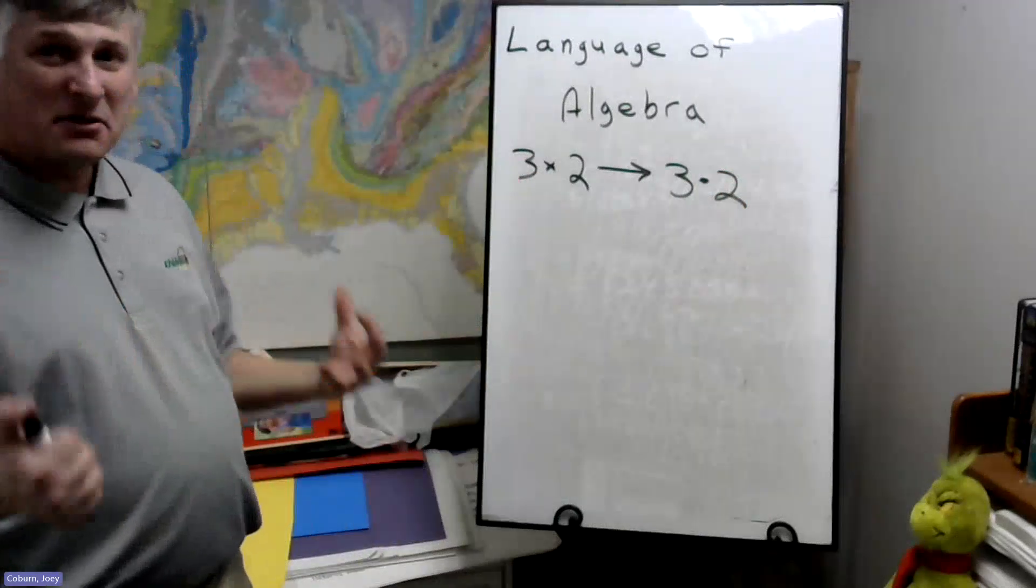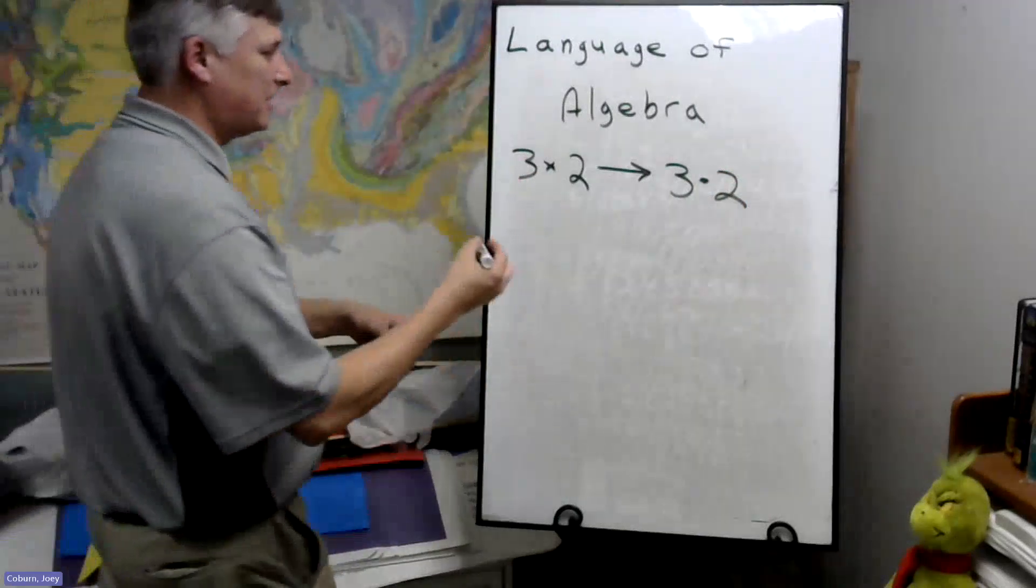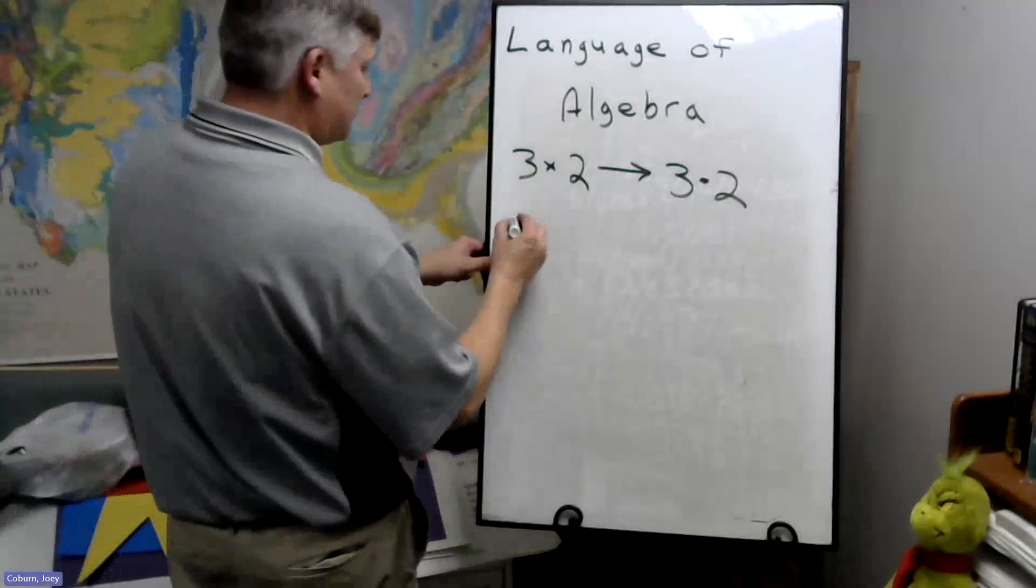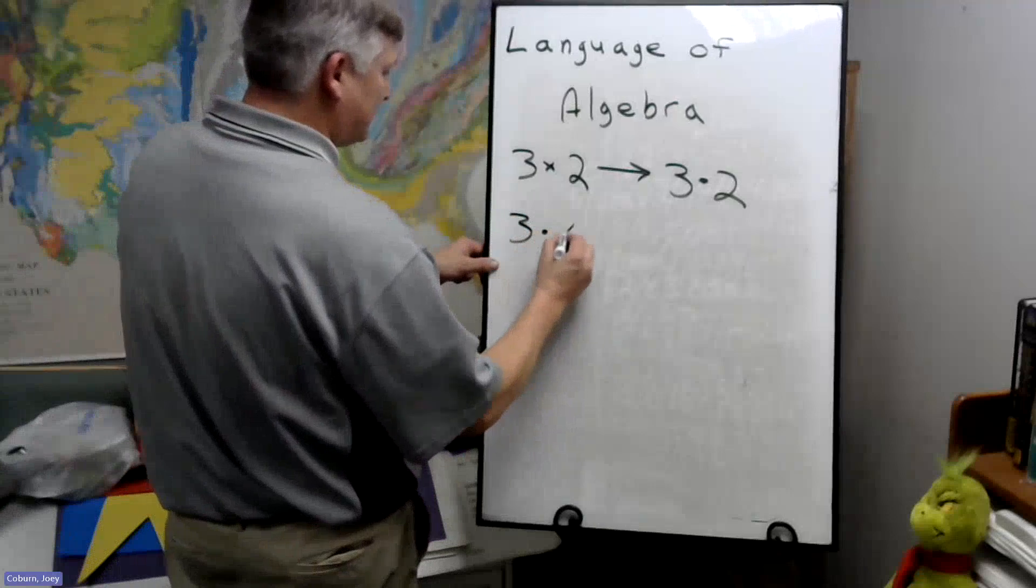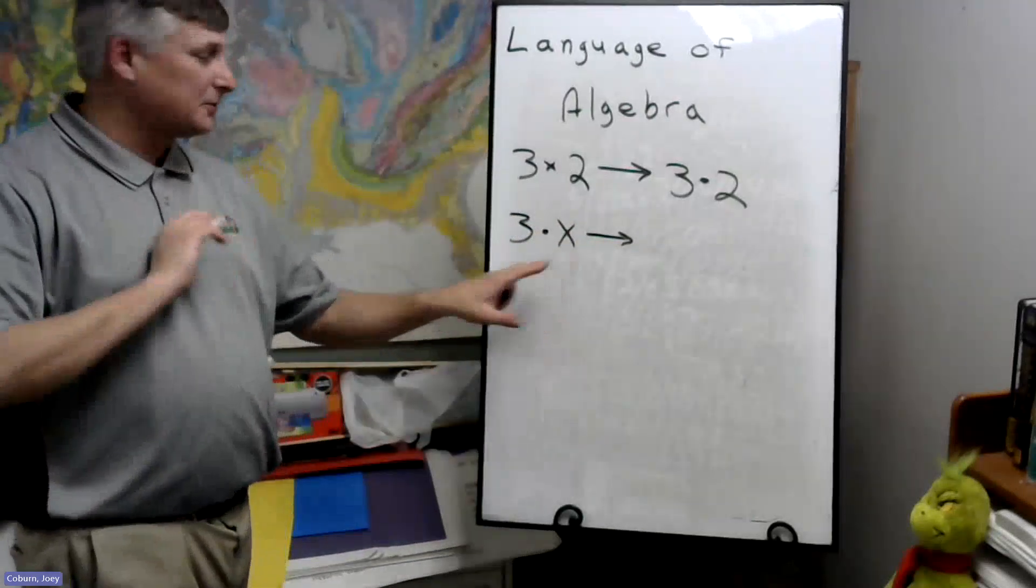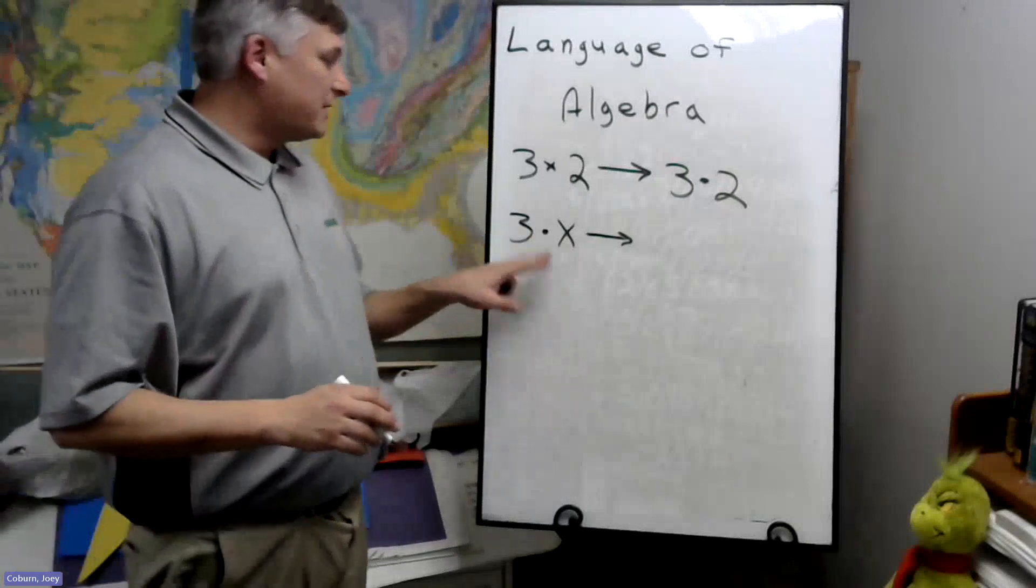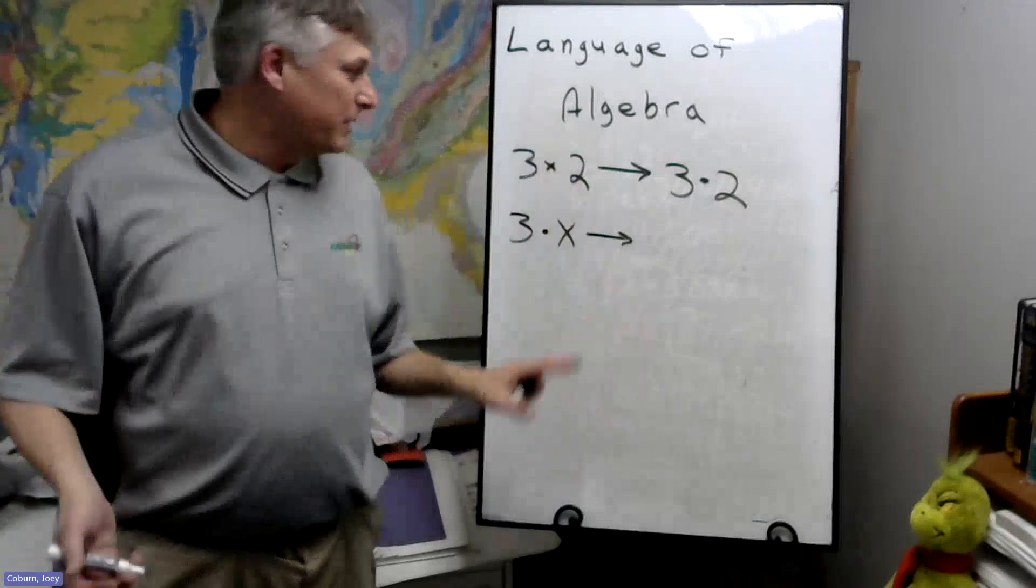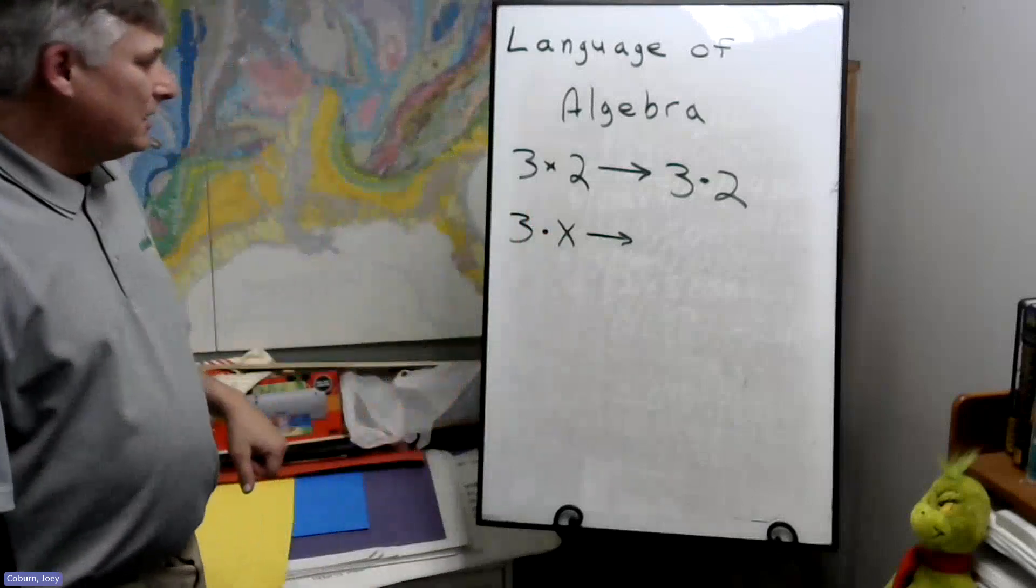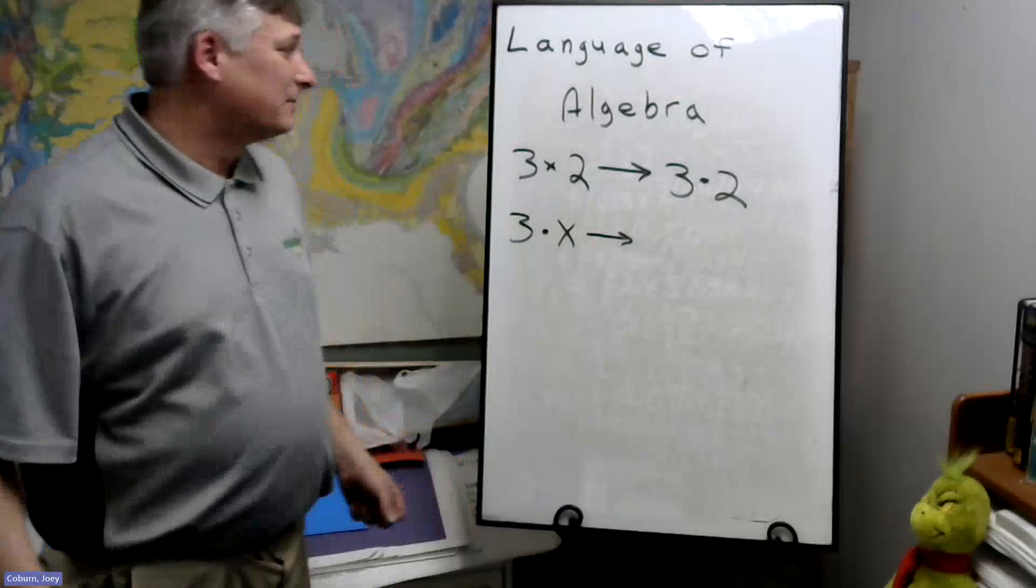Now another issue with multiplication is when you multiply numbers times variables. So suppose we have 3 times X. Now, this is the variable X. So what does 3 times X mean? Well, it's 3 times X, whatever hidden number, unknown number X might be.